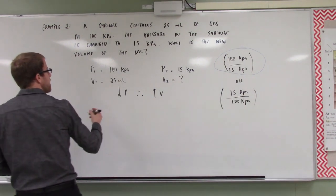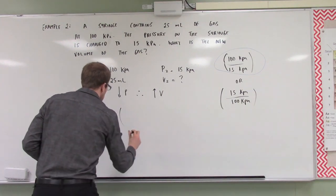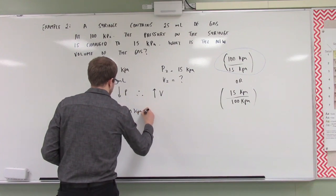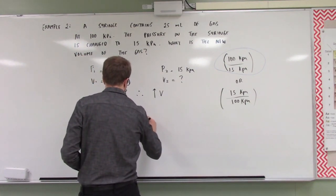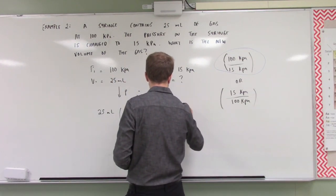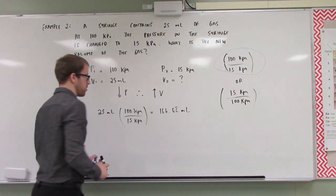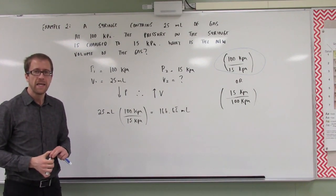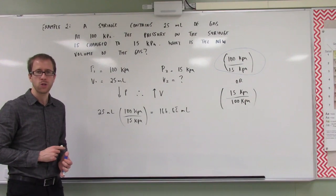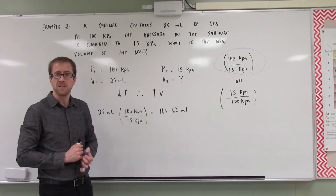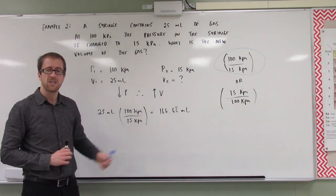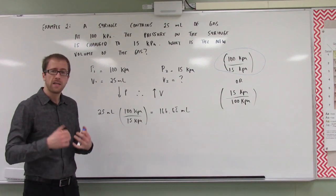So when I take our volume of 25 milliliters and multiply it by the ratio of our pressures, 100 over 15, we get 166.66 continuing milliliters as our answer. A lot of the time you're not going to get nice, easy numbers — you're going to get a 6.666 decrease in pressure. What does a 6.666 times decrease in pressure do to our volume? It increases it by 6.666 times. That is how you solve these problems.